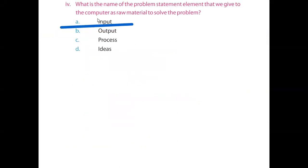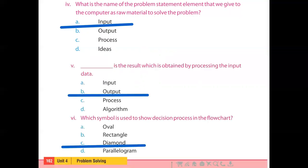Part number 4 is: what is the name of the problem statement that we give to the computer as raw material to solve the problem? Options are input, output, process, and ideas. Students, raw material is input. So option A is the right option.